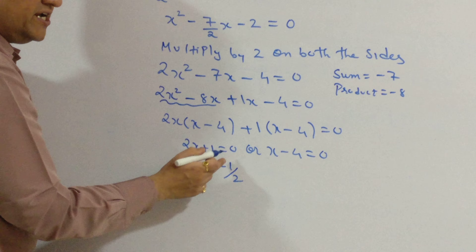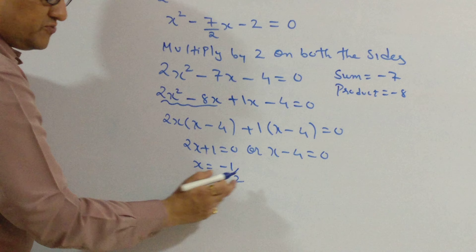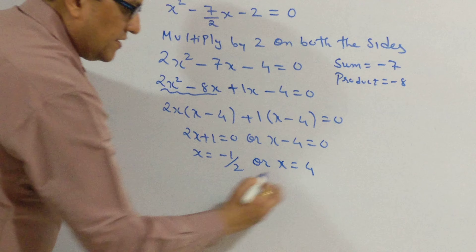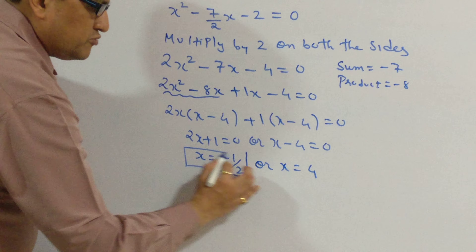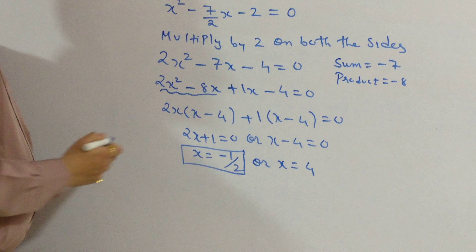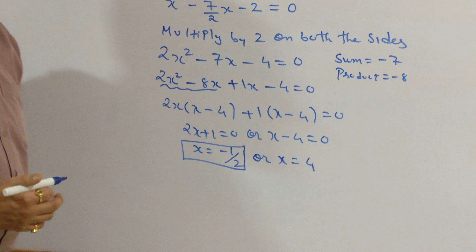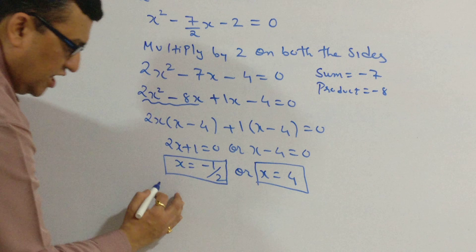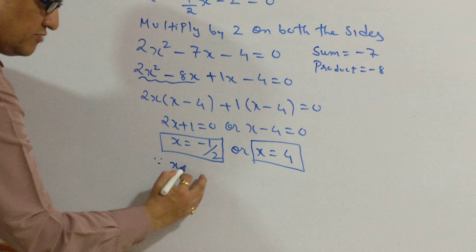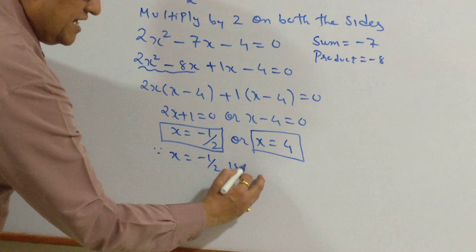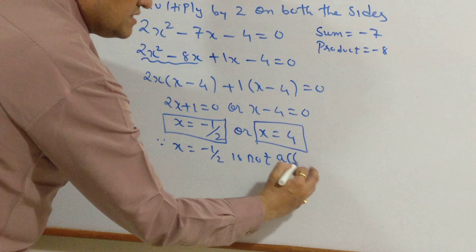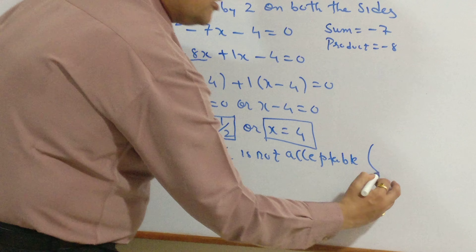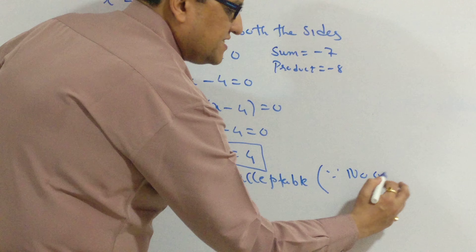From (2x plus 1) equals zero, x equals minus one by two; from (x minus 4) equals zero, x equals 4. Now x equals minus one by two is not acceptable because the number of students cannot be fractional and cannot be negative. So our acceptable answer is x equals 4. We write: since the number of students cannot be negative, x equals minus half is rejected.